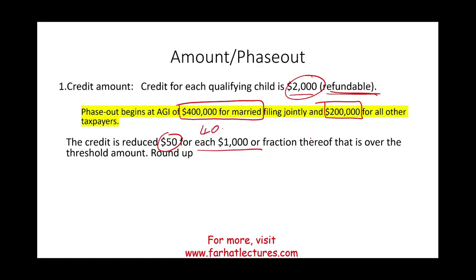For example, if you're married filing jointly and your modified adjusted gross income is $400,500, you round up to the next $1,000 — so that $500 becomes $1,000, meaning you are $1,000 above the threshold. That means you reduce your credit by $50, so rather than $2,000, your credit becomes $1,950. You keep reducing this until your credit goes down to zero.